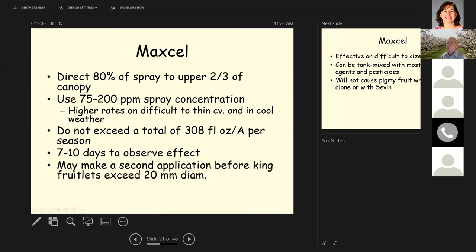Like with most thinning compounds you want in spray applications, you want to put 80% of your spray in the upper two-thirds of the canopy. The use rate is 75 to 200 parts per million and use the higher rates on difficult to thin varieties and in cooler weather. There's a maximum of 308 fluid ounces per acre per season to use.